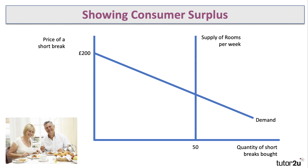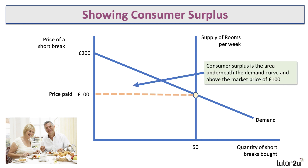Assuming supply of rooms for each weekend is fixed at 50 rooms, we have a perfectly inelastic supply curve. In theory you could sell all 50 rooms by charging 100 pounds for a weekend break. But some people are willing to pay more than 100 pounds, so there's consumer surplus — the area underneath the demand curve and above the market price of 100 pounds — representing consumer welfare.